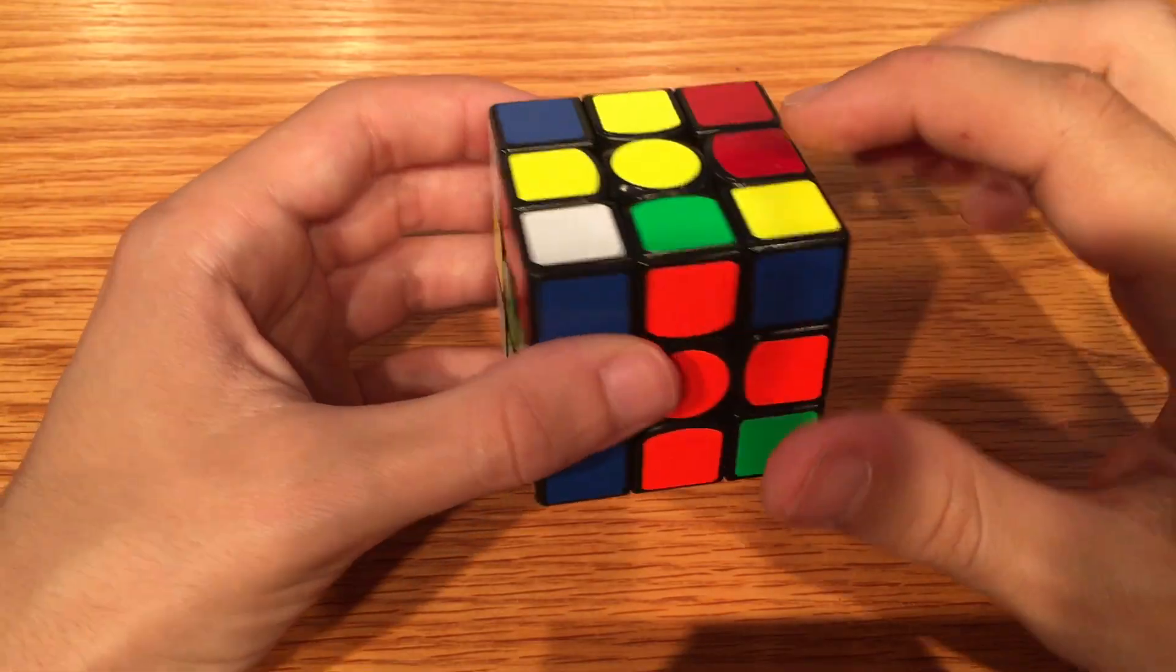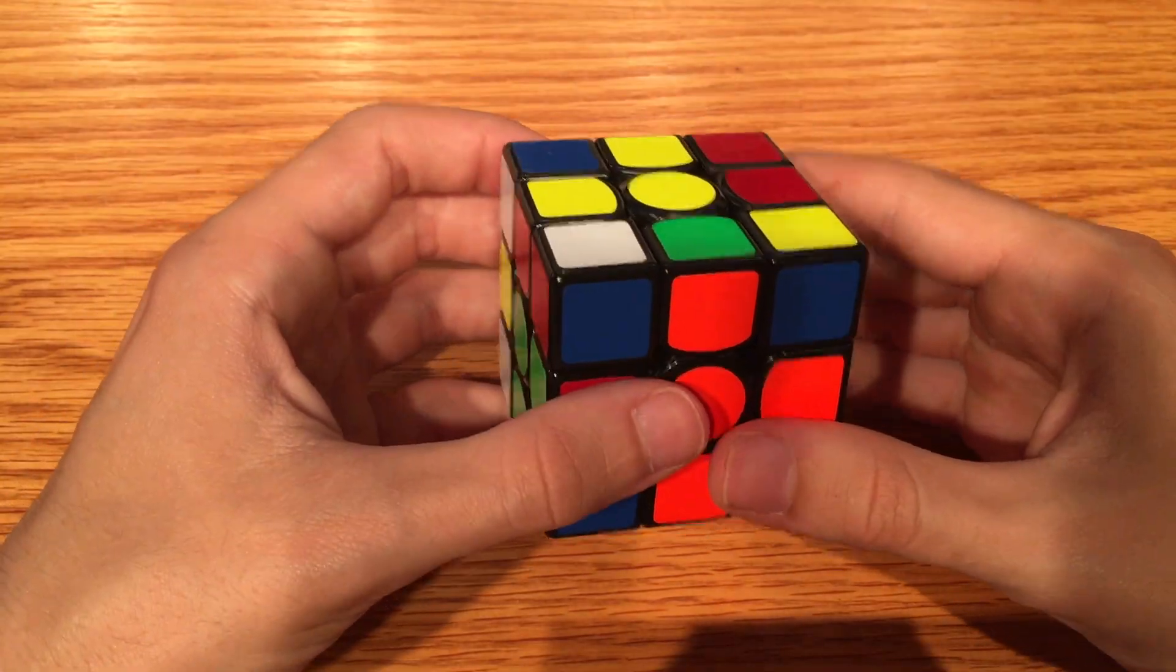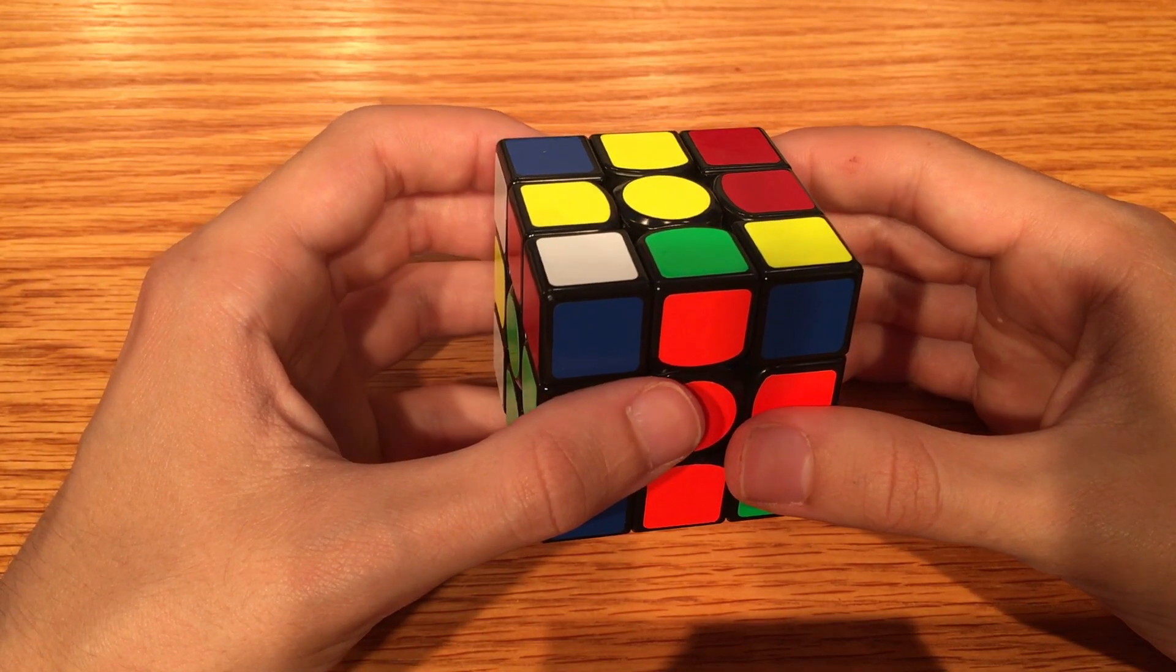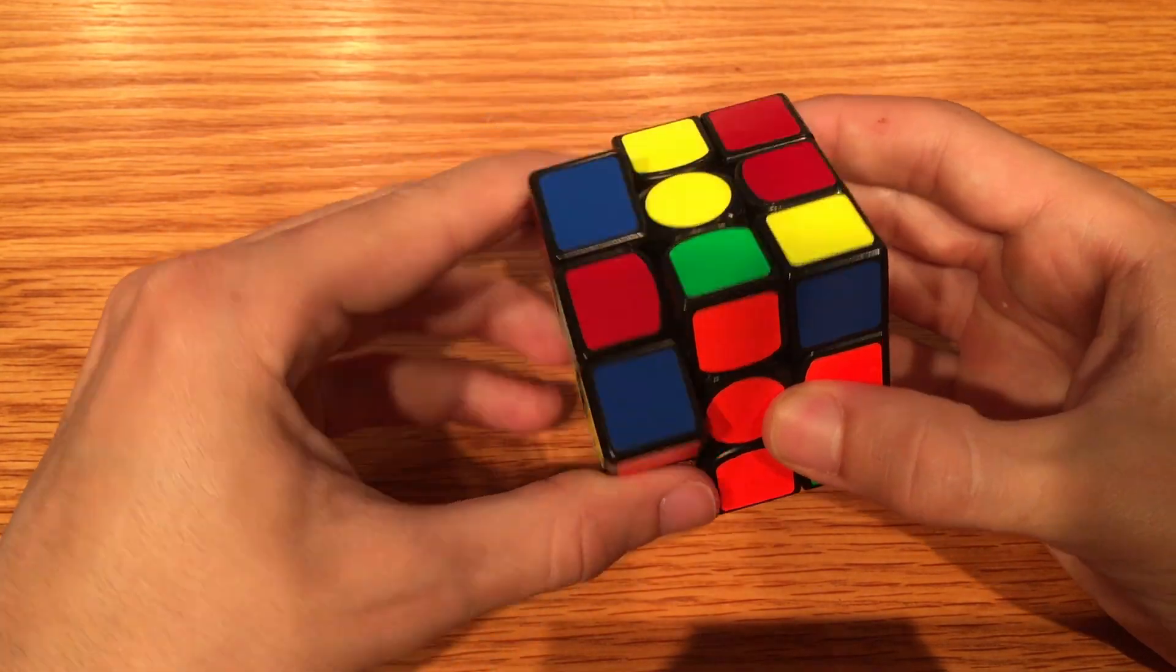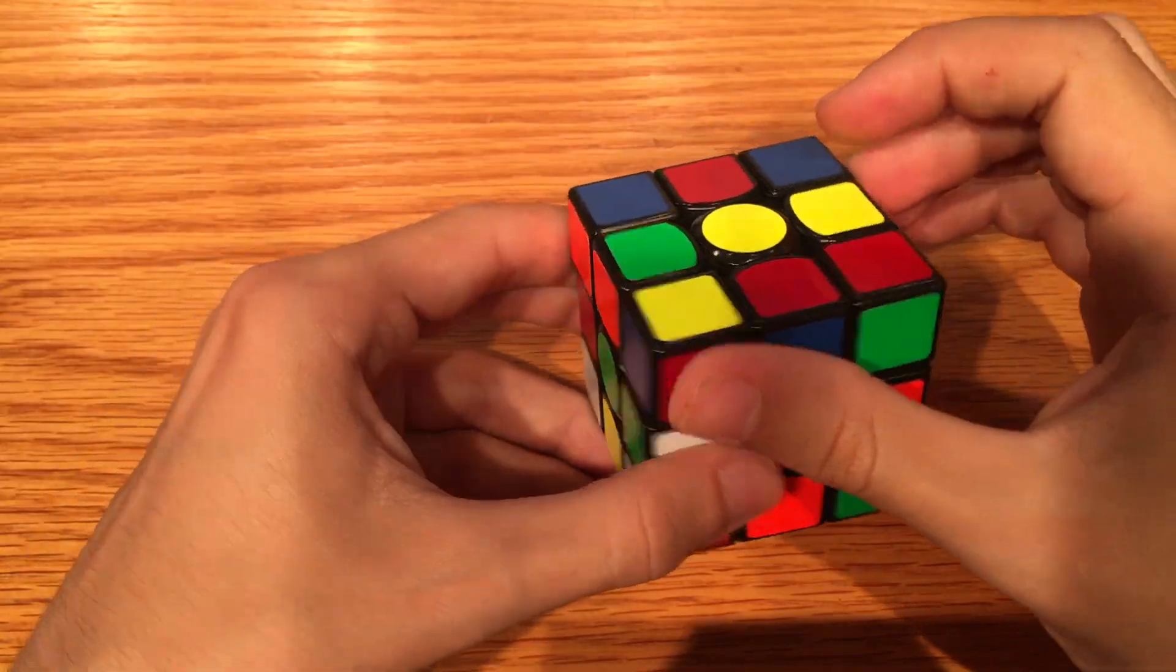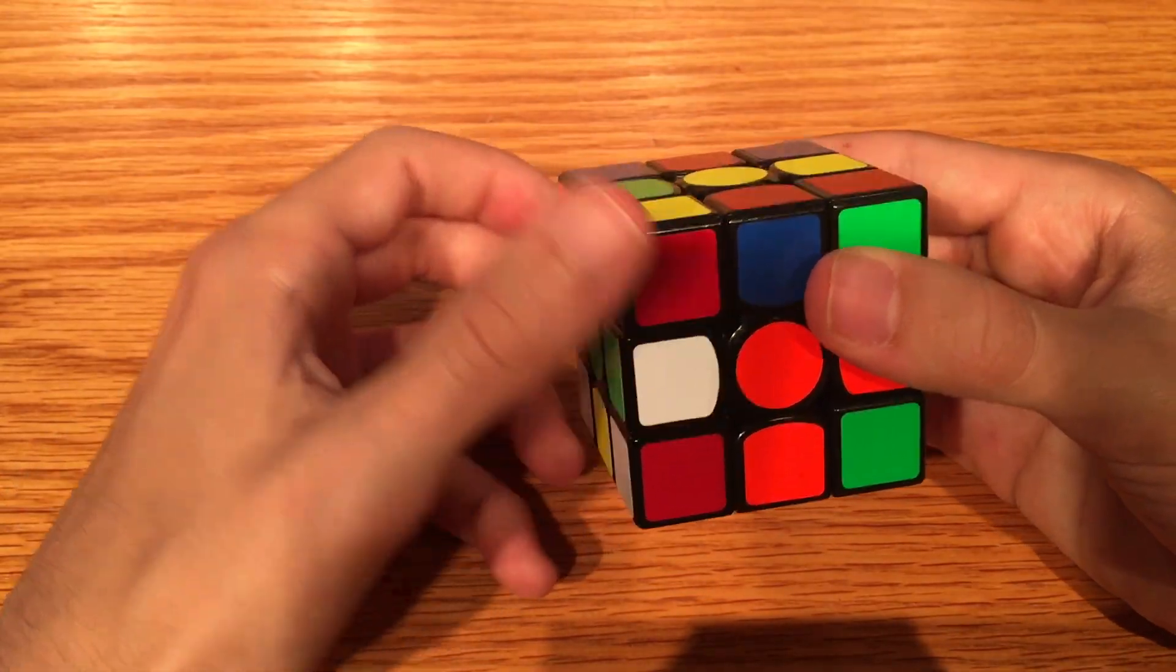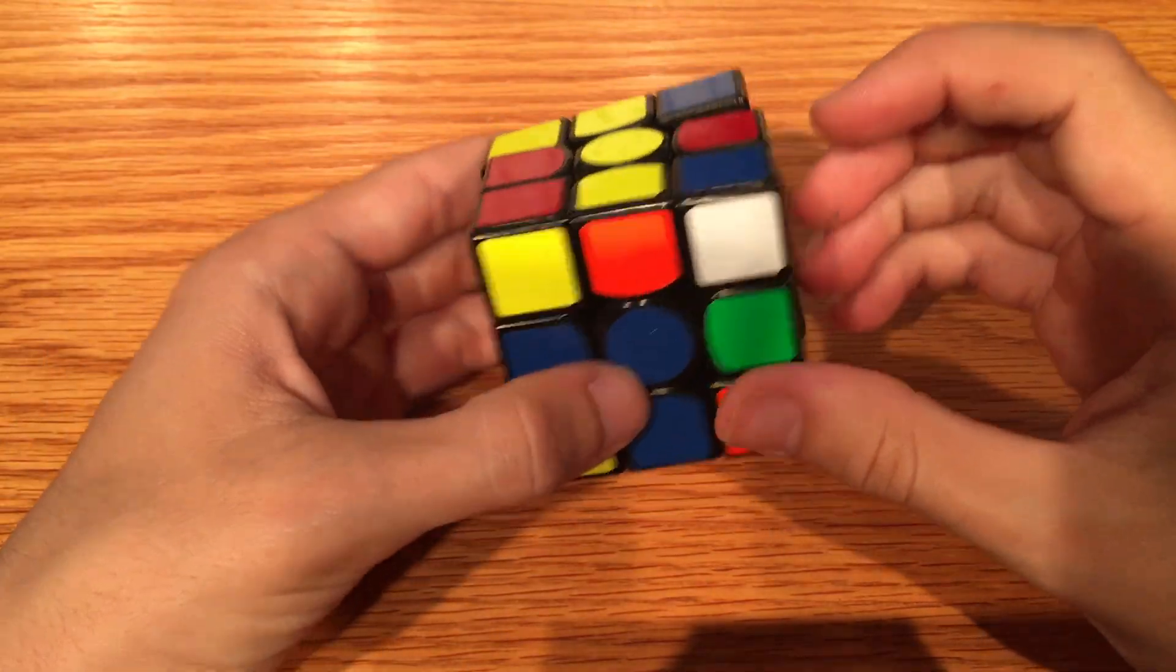So now, both our edge and our corner are on top, but the corner is white on top. This is simply obstacle number two. So let's throw it up. We throw it up, move the top layer so that both pieces are out of the way, and then we messed up our cross piece, so we just move that back down.